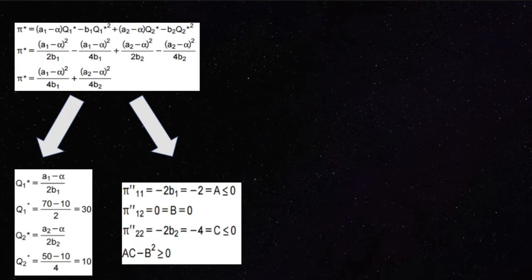Suppose we give these values to the constants: a1 equals 70, b1 equals 1, a2 equals 50, b2 equals 2, alpha equals 10.